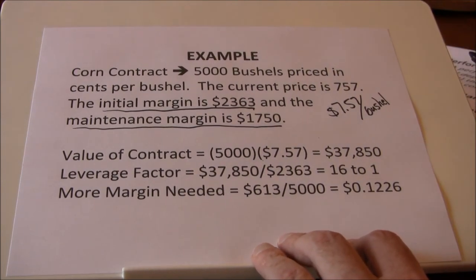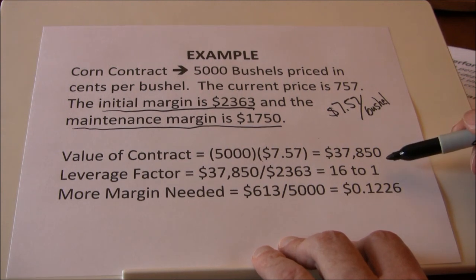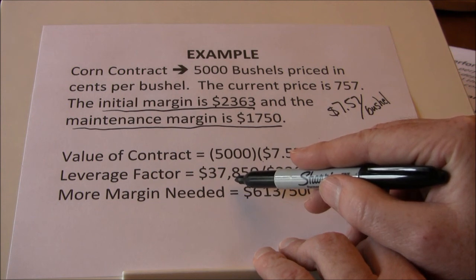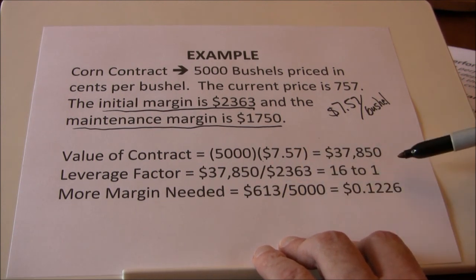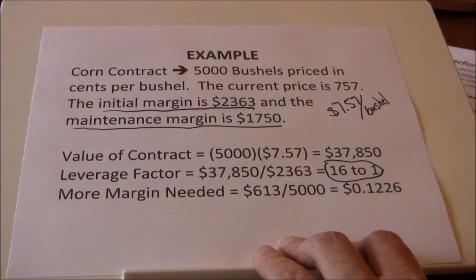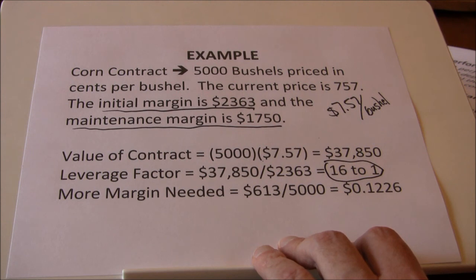One of the appeals of futures contracts is the leverage. Because you only put in an initial margin and you're controlling a much bigger value of the underlying asset, you have tremendous leverage. In the example of corn, we have a 16-to-1 leverage factor. For every 1% the corn price moves, I earn or lose a 16% return on my investment. If I'm long and corn goes up by 1%, I earn a 16% return. On the other hand, if corn goes down by 1%, I lose 16% of my initial investment.